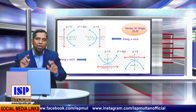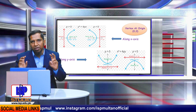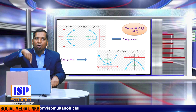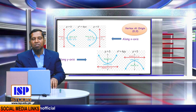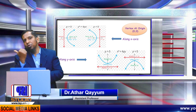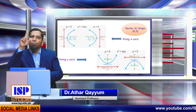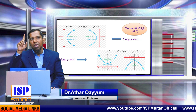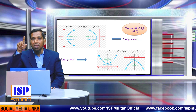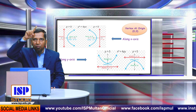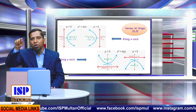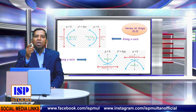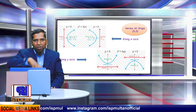To summarize for vertex at origin: along the x-axis — if p is positive, parabola opens right; if p is negative, parabola opens left. If y is linear (y power one), the parabola is about the y-axis. Along the y-axis — if p is positive, parabola opens upward; if p is negative, parabola opens downward.